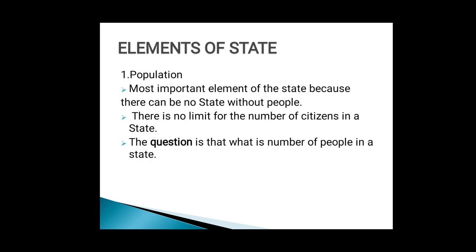Our first element is population. It is the most important element of the state, because there can be no state without the people. There is no fixed limit for the number of citizens in the state. So the question comes: what is the ideal number of people in a state?